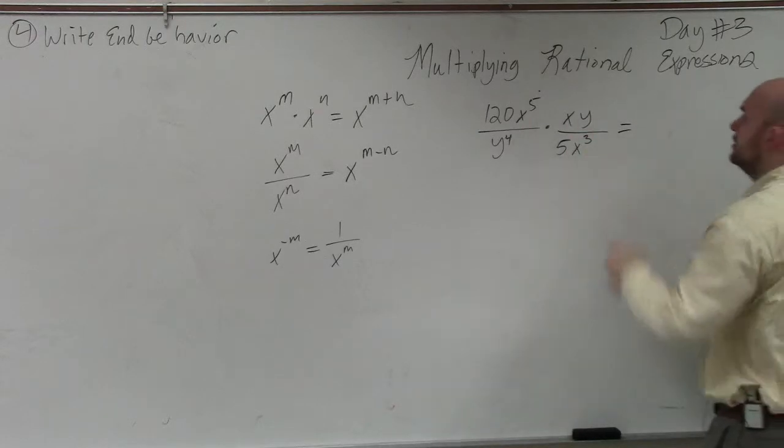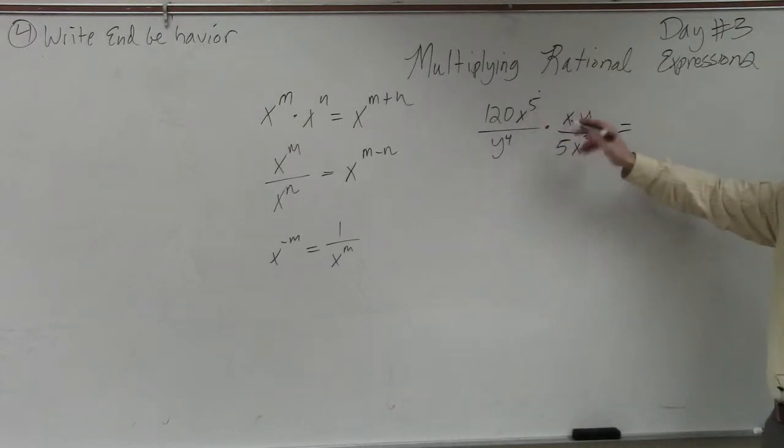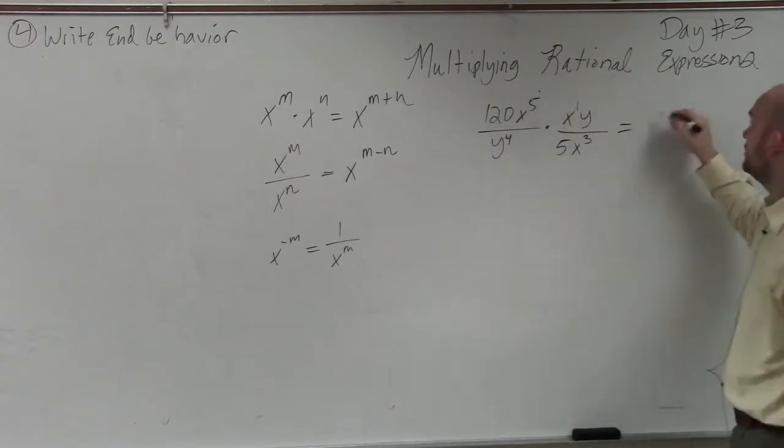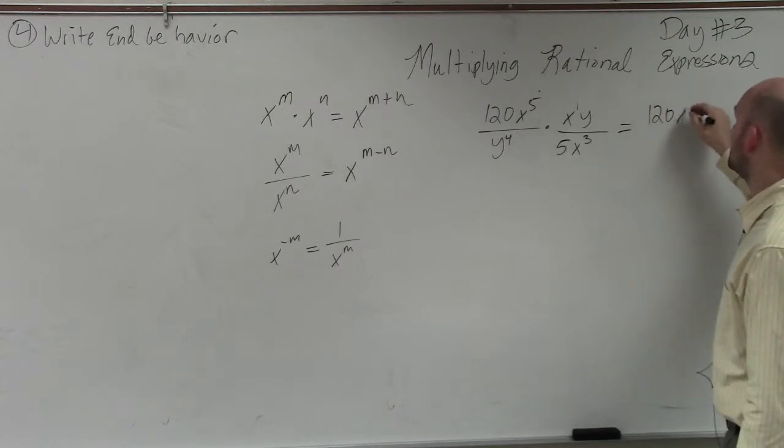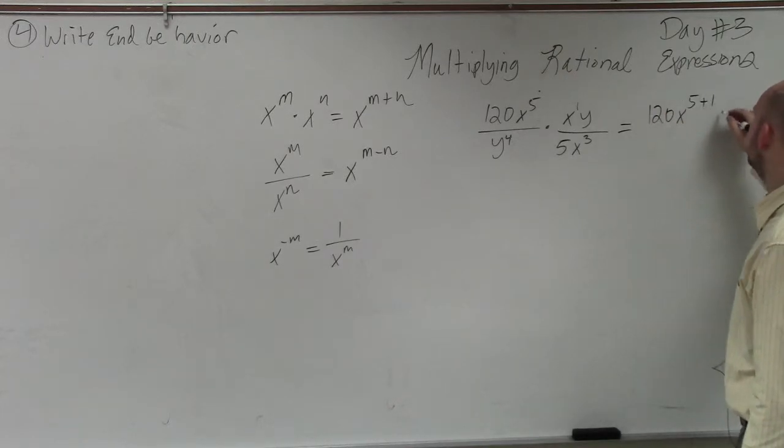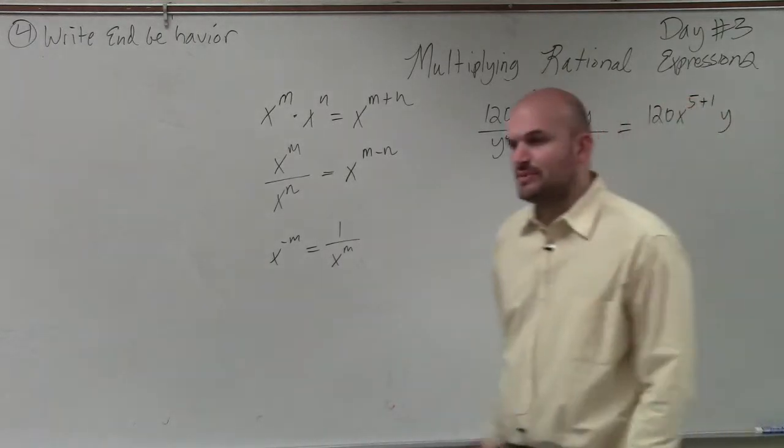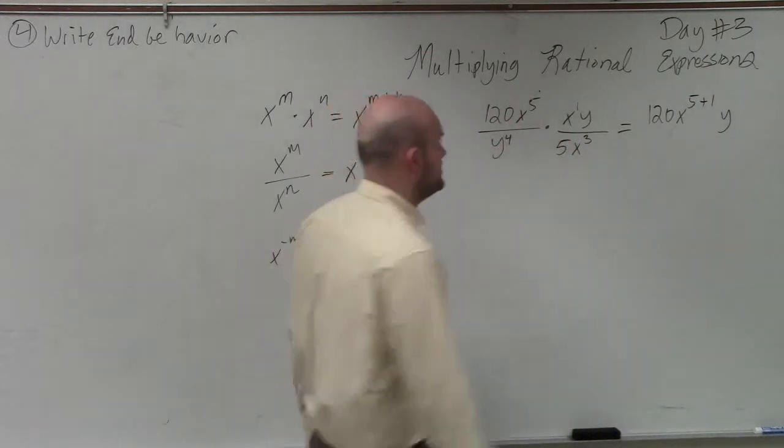So the first thing we're going to do is say, all right, can I multiply 120 times anything? No. Can I multiply x to the fifth times x to the first power? Right, would be, so I have 120x to the 5 plus 1. And then y, I don't have anything to multiply by y. Then I do the next one.